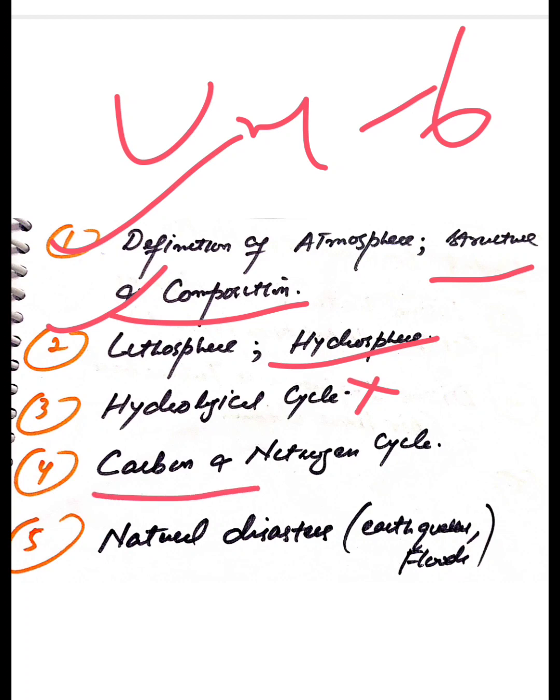Third one is carbon and nitrogen cycle. Nitrogen cycle is very important, carbon cycle is also very important. Hydrologic cycle is also important, but nitrogen cycle is particularly important.